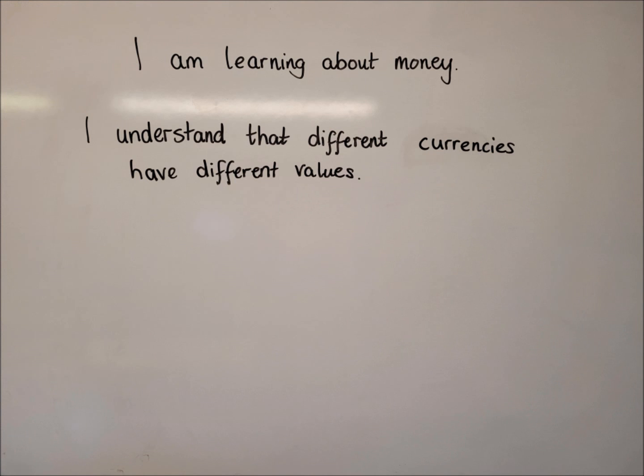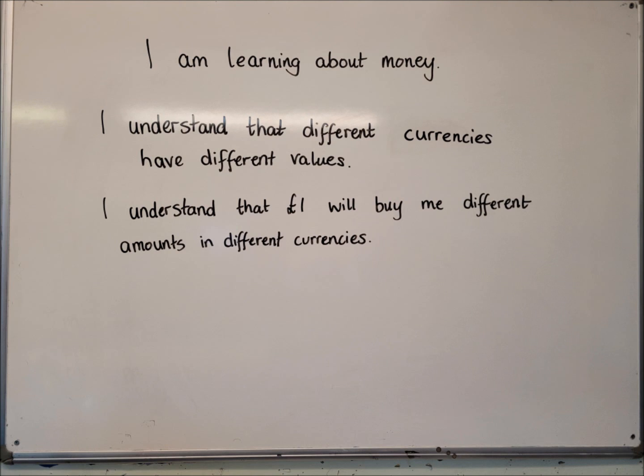So hopefully from Monday when we're researching different coins from around the world, we discovered that lots of different countries have different currencies. So our first success criteria today, I understand that different currencies have different values. So that £1 and $1 for example are not exactly the same thing. And we'll have a look at that in this lesson. The second success criteria is going to be that I understand that £1 will buy me different amounts in different currencies.